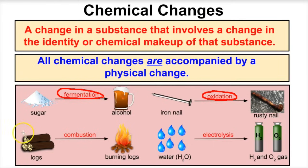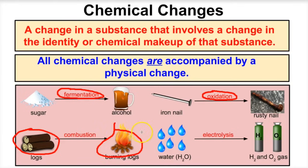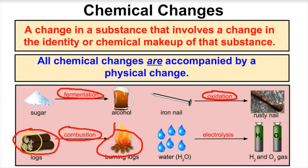If we take some logs and light them on fire, this is an example of a chemical change. Anytime we burn something, or anytime there's combustion going on, that's going to be a chemical change because we're changing the chemical composition of those logs.